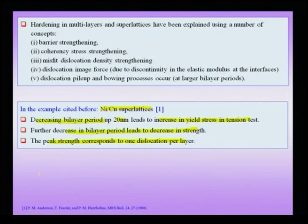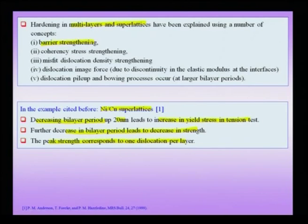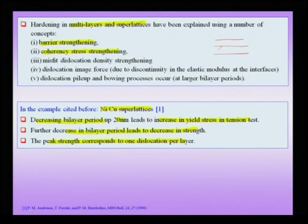The hardening in such multilayers and superlattices has been explained using a number of concepts, some of which are still debated. One mechanism involves barrier strengthening. There is expected to be some coherency between layers A and B at the interface — an epitaxial relationship — giving rise to coherency stresses which modify the local stress state from an externally applied shear or tensile stress.